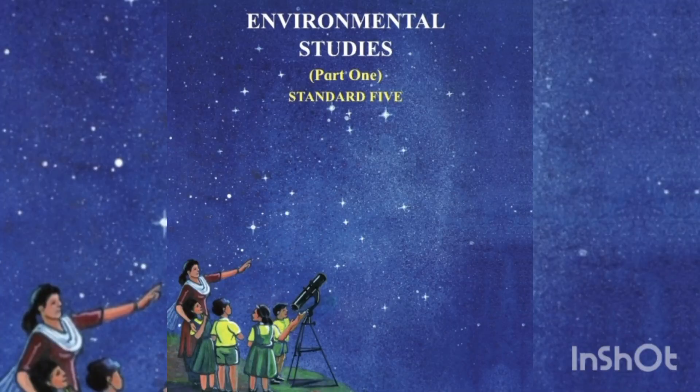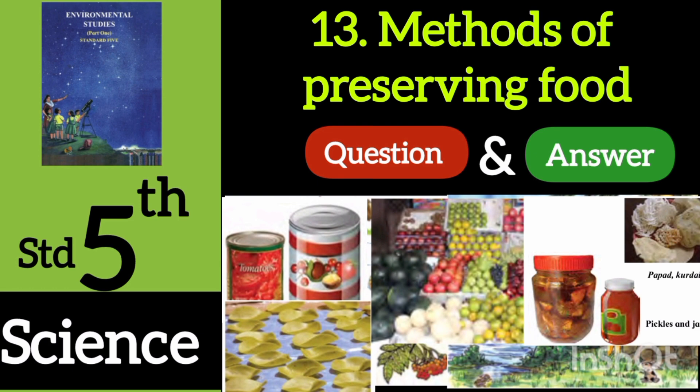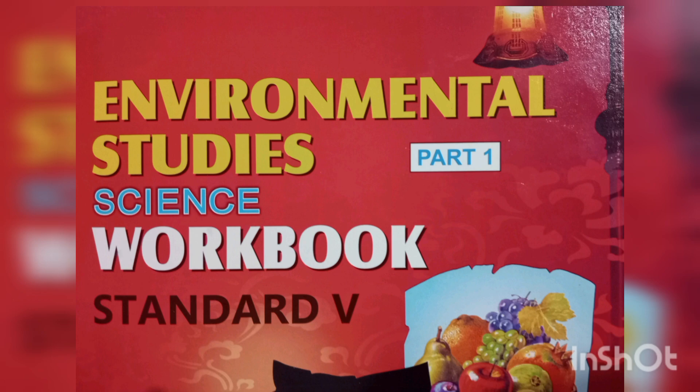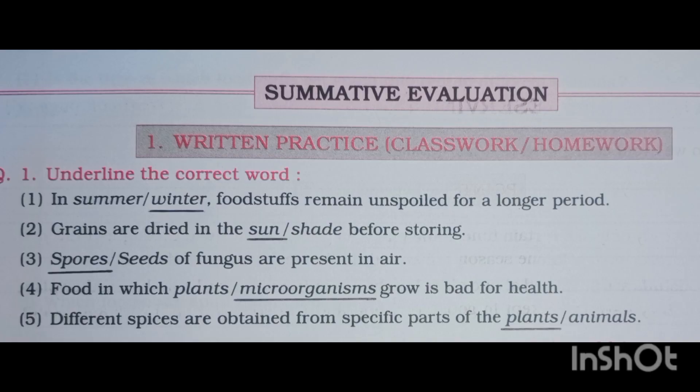Hello friends, today we are going to write Science subject, Standard 5th, Lesson number 13: Methods of Preserving Food — all workbook questions and answers. Question number one: underline the correct word. First one: in summer or winter, foodstuffs remain unspoiled for a longer period — answer is winter. Second: grains are dried in sun or shade before storing — answer: sun.